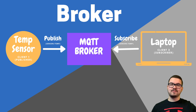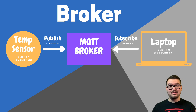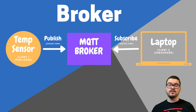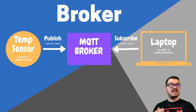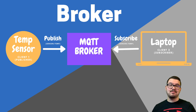Now we know a bit about the concepts, let's look at this example and learn some more details. We have client one and client two. Client one is a microcontroller — let's say it's an Arduino with a temperature sensor attached to it. Client two is a laptop.